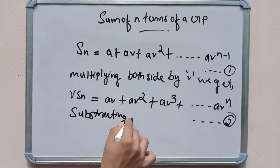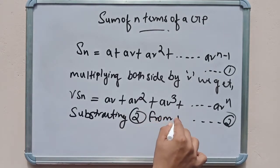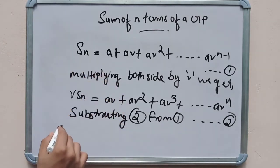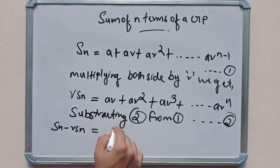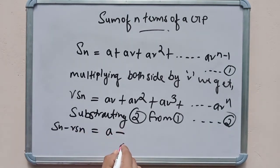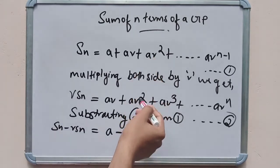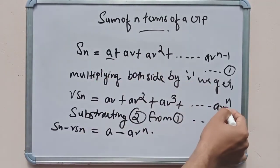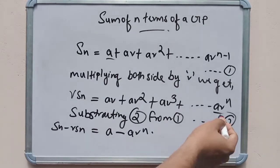Subtracting equation 2 from equation 1, we get Sn minus r·Sn equal to a minus ar^n.